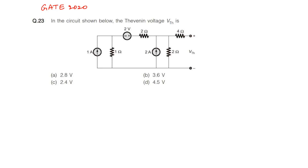In this question we are going to calculate the Thevenin voltage across the terminals shown. To solve this problem, it is easy by applying the source transformation theorem. First, look at this branch — you can apply source transformation and write the Thevenin equivalent in this way.